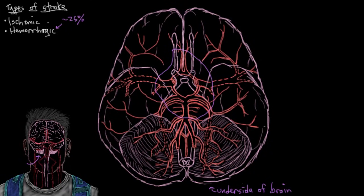So what's a hemorrhagic stroke? A hemorrhagic stroke is essentially when one of your blood vessels in your brain springs a leak and begins to leak blood out of the vessel and into the skull cavity.